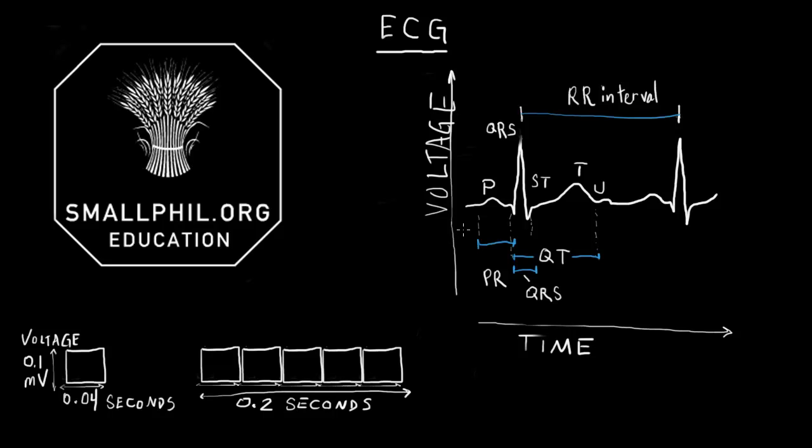The structure of the tracing has very specific parts. This is the P. This is the QRS complex. This is the ST wave. This is the T. This is the U wave.